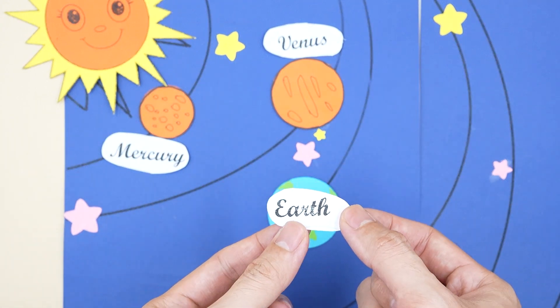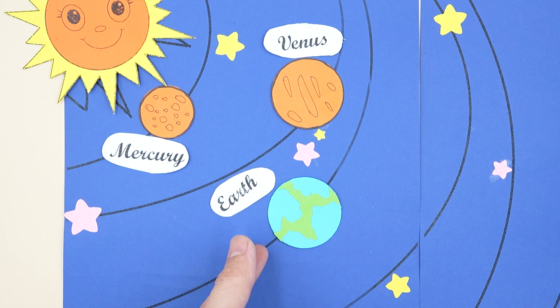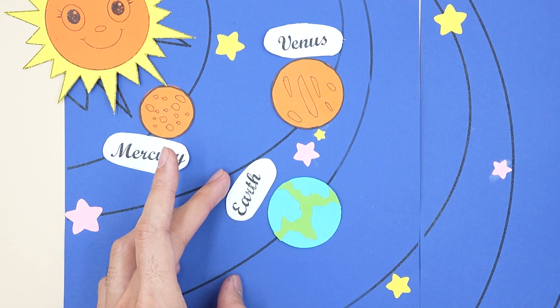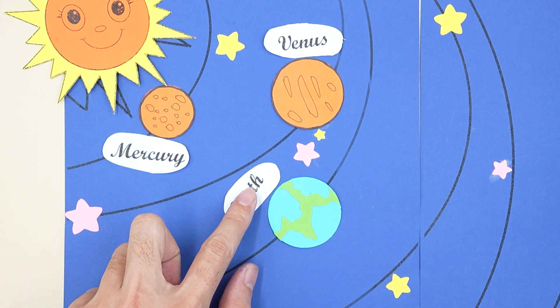Now I will put the word Earth in the picture. Earth has a beautiful position in the solar system. Everything is balanced to create life.